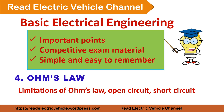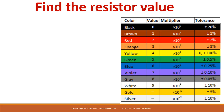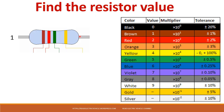In this video let us see about Ohm's Law and its limitations, then what is an open circuit and short circuit condition in an electric circuit. In the previous video I asked you to find the resistor value. The first color band is brown and the second one is red.